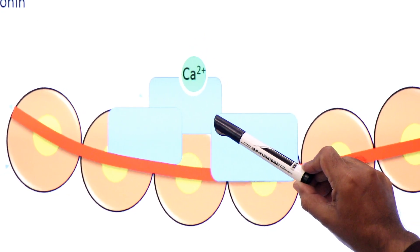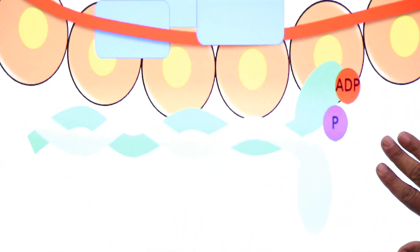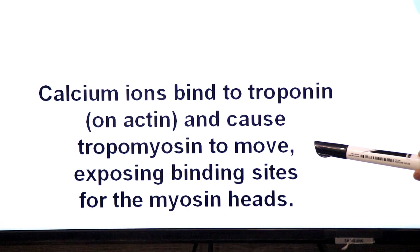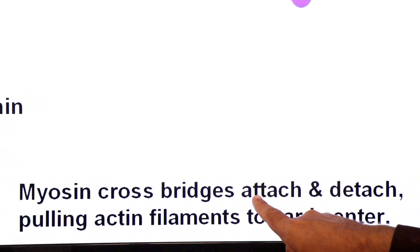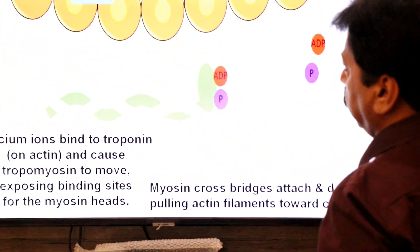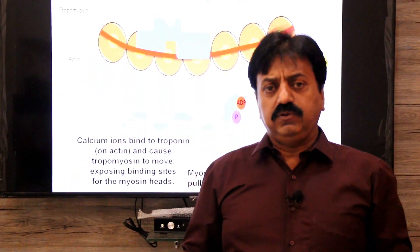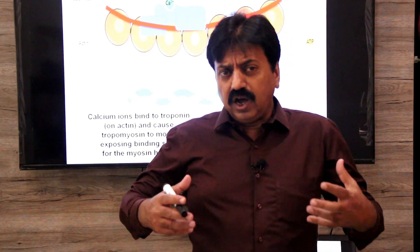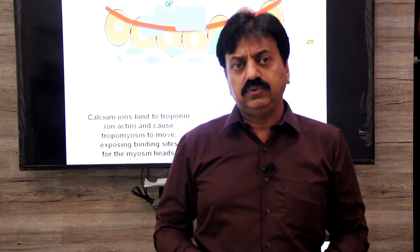Calcium ions bind to troponin on actin and cause tropomyosin to move, exposing binding sites for the myosin head. The myosin cross bridges attach and detach, pulling actin filaments towards the center. To summarize the topic of control of muscle contraction: the important points are the neuromuscular junction and its steps, and the regulatory proteins troponin and tropomyosin. Thank you, dear students, wishing you all the best.